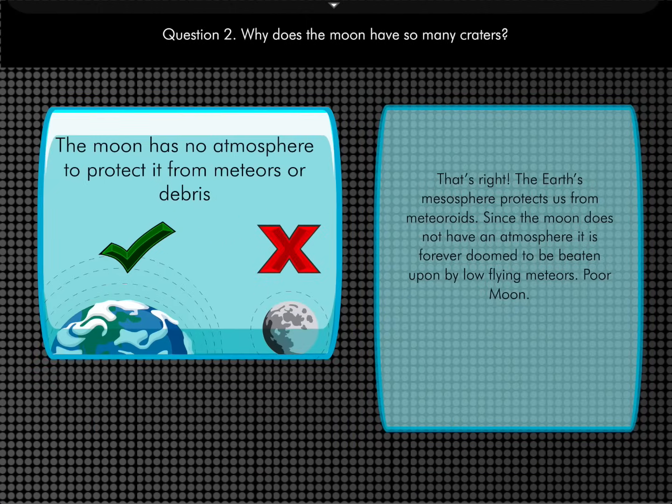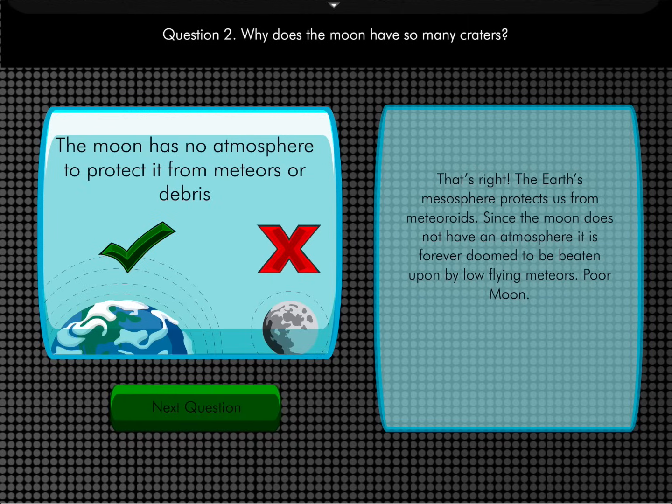That's right. The Earth's mesosphere protects us from meteoroids. Since the moon does not have an atmosphere, it is forever doomed to be beaten up by low-flying meteors. Poor moon.